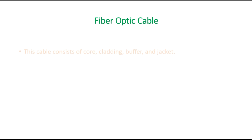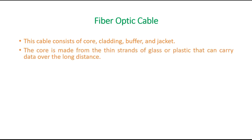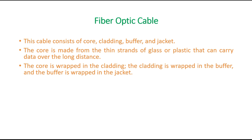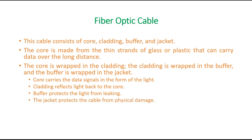Fiber optic cable consists of four parts: the core, cladding, buffer, and jacket. The core is made from thin strands of glass or plastic that can carry data over long distances. The cladding wraps the core, the buffer wraps the cladding, and the jacket wraps the buffer. The core carries data signals in the form of light; the cladding reflects light back to the core; the buffer protects light from leaking; and the jacket protects the cable from physical damage.